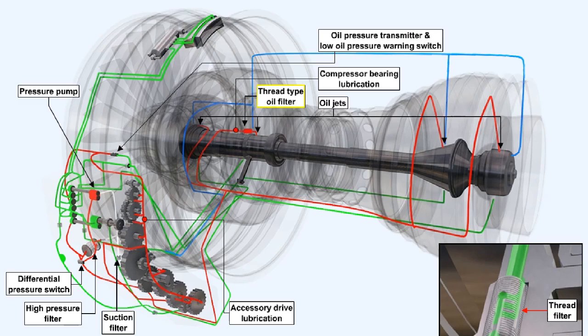Thread type filters are fitted in the oil supply line just before the oil jets. Thread type filters perform the function of a last chance filter, removing any debris which may have managed to pass through the main pressure filter.